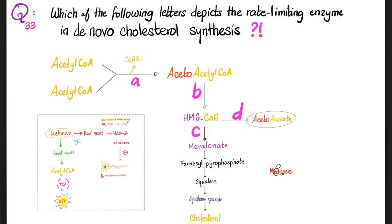Let's try to name all of these enzymes. B is HMG-CoA synthase, which synthesizes HMG-CoA, and C is HMG-CoA reductase, which is the key rate-limiting enzyme in de novo cholesterol synthesis in your liver. Now, what is enzyme A and what is enzyme D? Enzyme A is thiolase — don't forget that thiol means sulfur. As for D, let me know your answer in the comments.